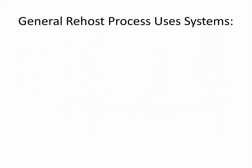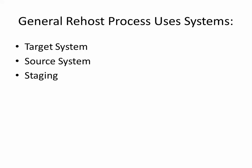Generally the rehost process uses a few systems. The target system — we need to know what our target system will be, and we need to plan where the source is and where the target is, and what prerequisites we need to do before proceeding with the rehost. Coming to the staging area — if we don't have communication between the source and the target, for example between production and test, we need to create a staging area where we can store our data like the database, source code, file vaults, and LDAP.